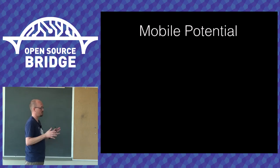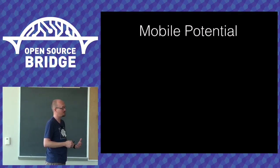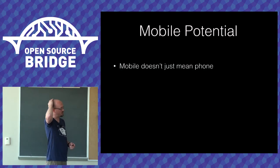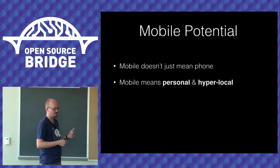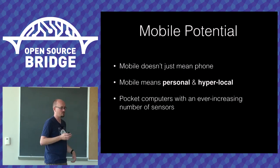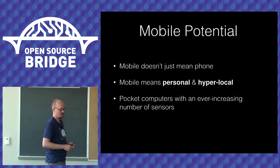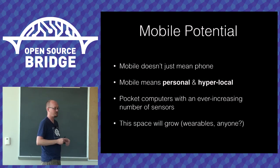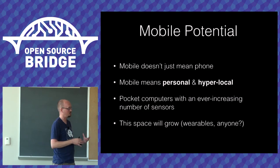Back to the mobile side — this is my wheelhouse. Mobile doesn't just mean a phone in your pocket; it's a very personal, hyper-local device with an ever-increasing number of sensors: altitude, barometric pressure, heart rate. It's essentially a pocket computer with intelligence about your context — where you are, what you're doing — that's typically much higher than a desktop environment.